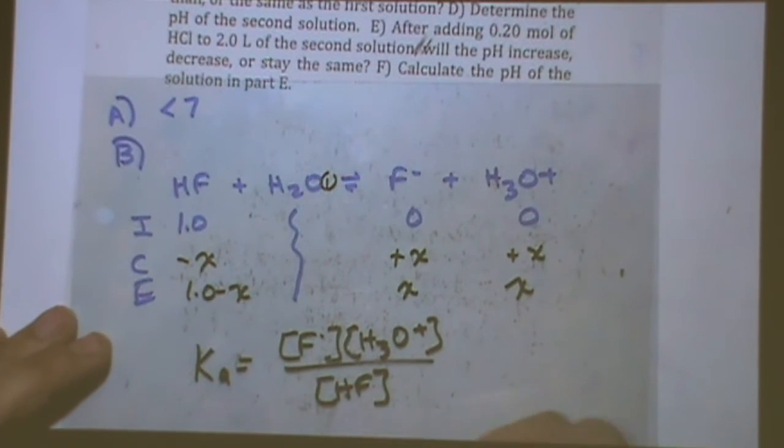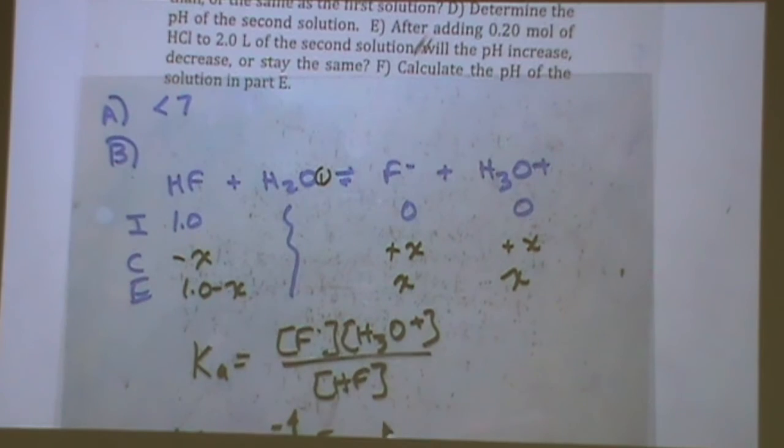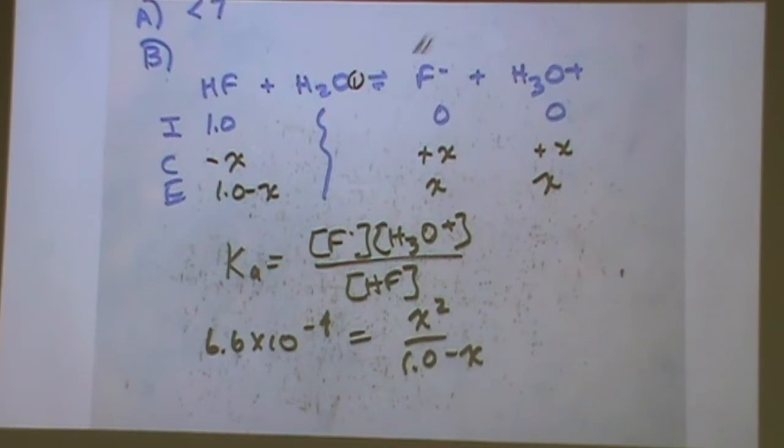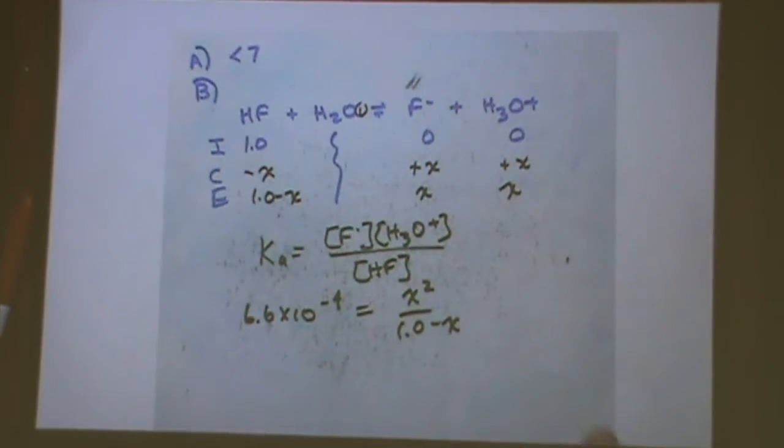So Ka, I have to look up. It would be on the back of the exam in the table. This would be 6.6 times 10 to the minus 4. And that equals x squared over 1.0 minus x.